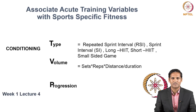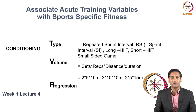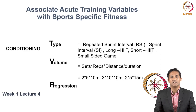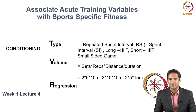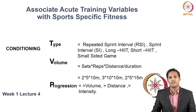Volume for conditioning can be written as sets multiplied by reps multiplied by distance, though the total volume is much smaller because conditioning is not just done in a linear direction. Conditioning is a variable which is required when your athletes want to prepare for any sporting activity. Progression for conditioning can be given by first increasing the volume and then increasing the intensity.